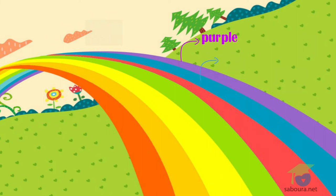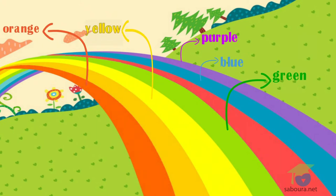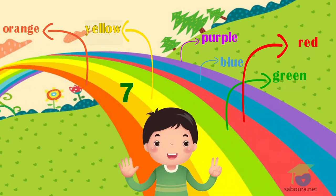Rainbow purple. Rainbow blue. Rainbow green and yellow. Rainbow orange. Rainbow red. Rainbow shining overhead.